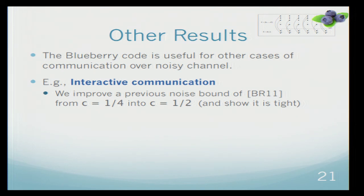By using the blueberry code, we were able to improve this result of Braverman and Rao and show how to compute any function as long as the noise is less than half. And we also show that this is tight. So if the adversary is capable of making more than half noise, then he can actually completely block one of the parties and there is no hope to be able to compute anything. This is a tight result.